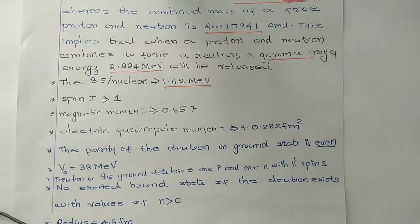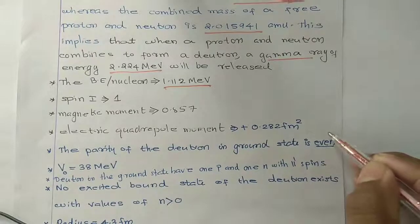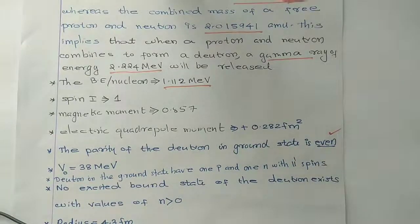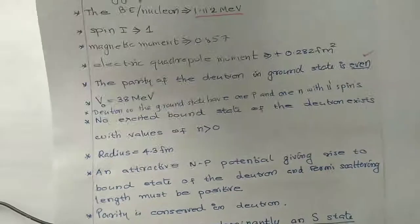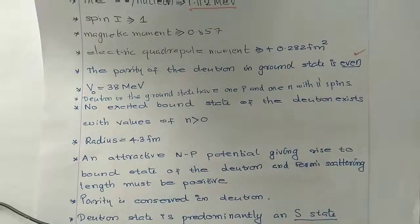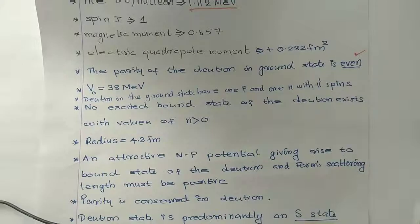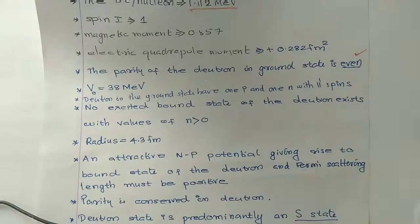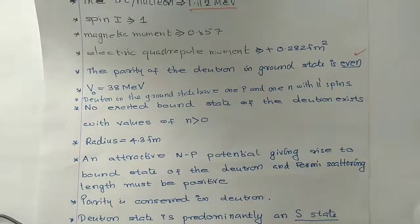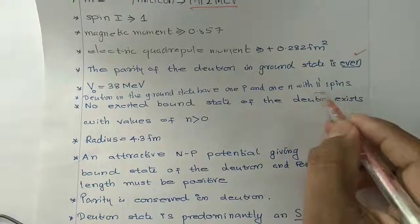The quadrupole moment is 0.2852 amu. Parity of the deutron in the ground state is even, with 6.4mm change. The potential version is 30 mega electron volts. The deutron in ground state has 1 proton and 1 neutron with parallel spins. Parallel spins are triggered.